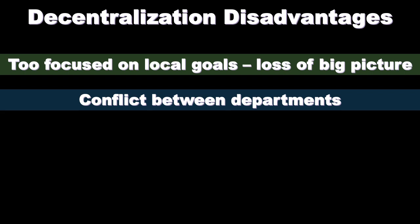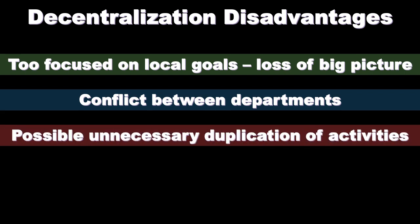The way to reduce interdepartmental conflict is to have an organizational culture where the overarching vision remains the overarching goal, with management aligned to that vision. Communication between departments and with management regarding conflicts is key.